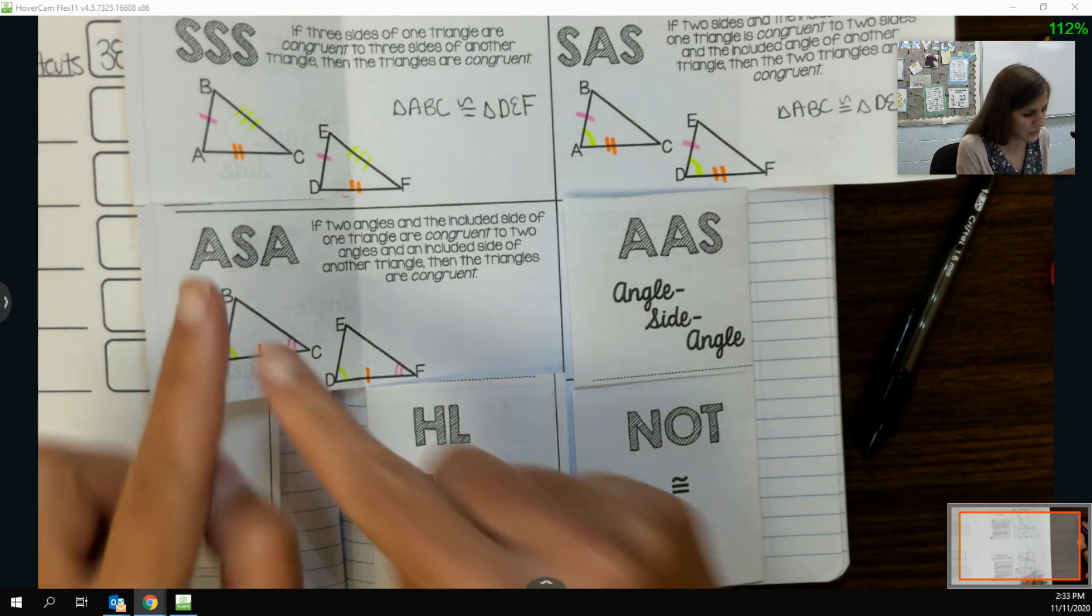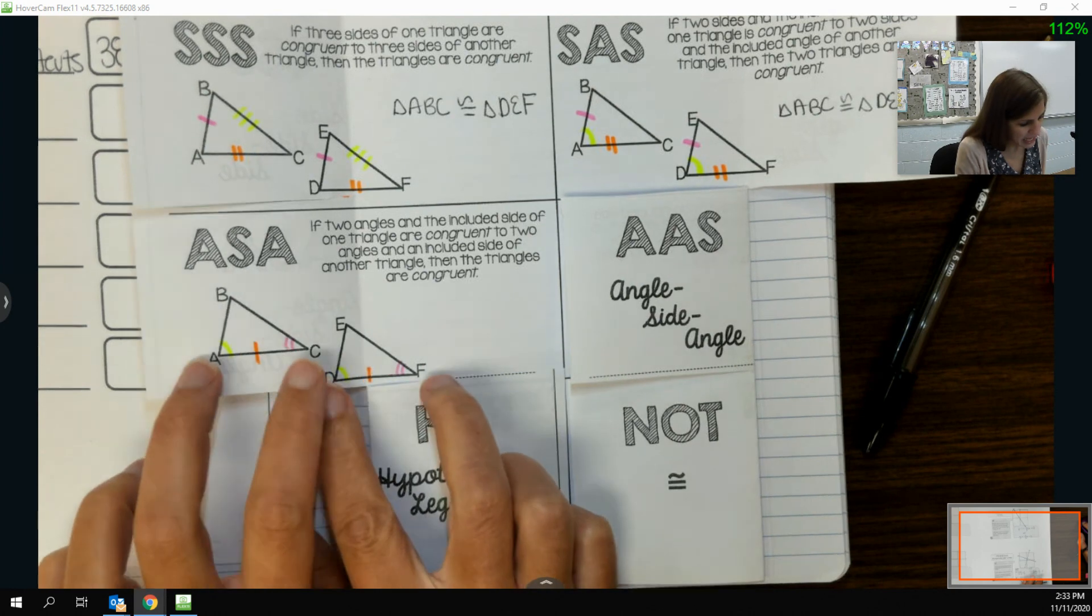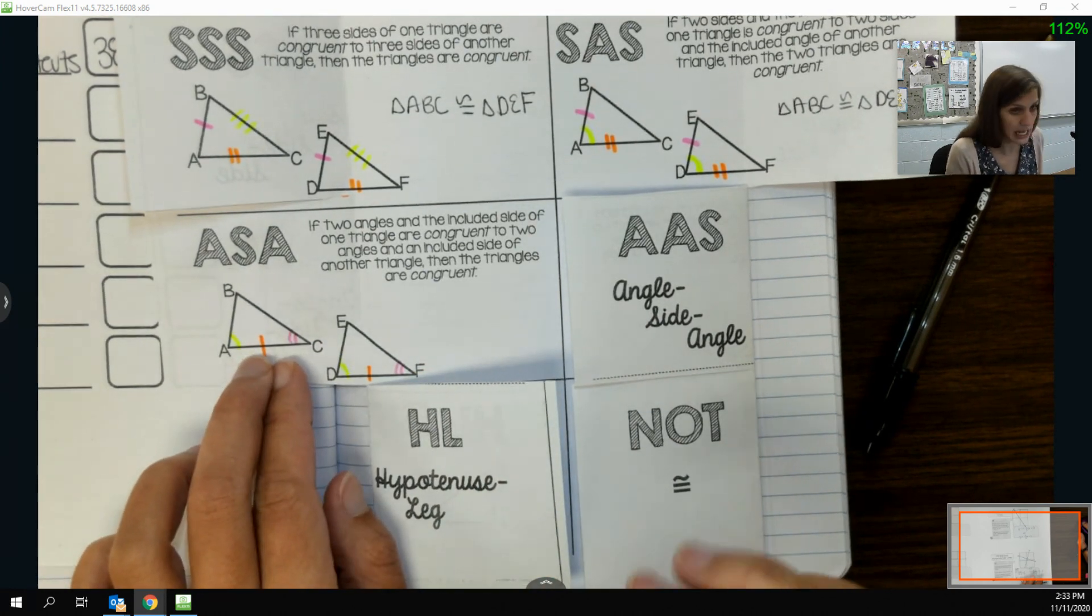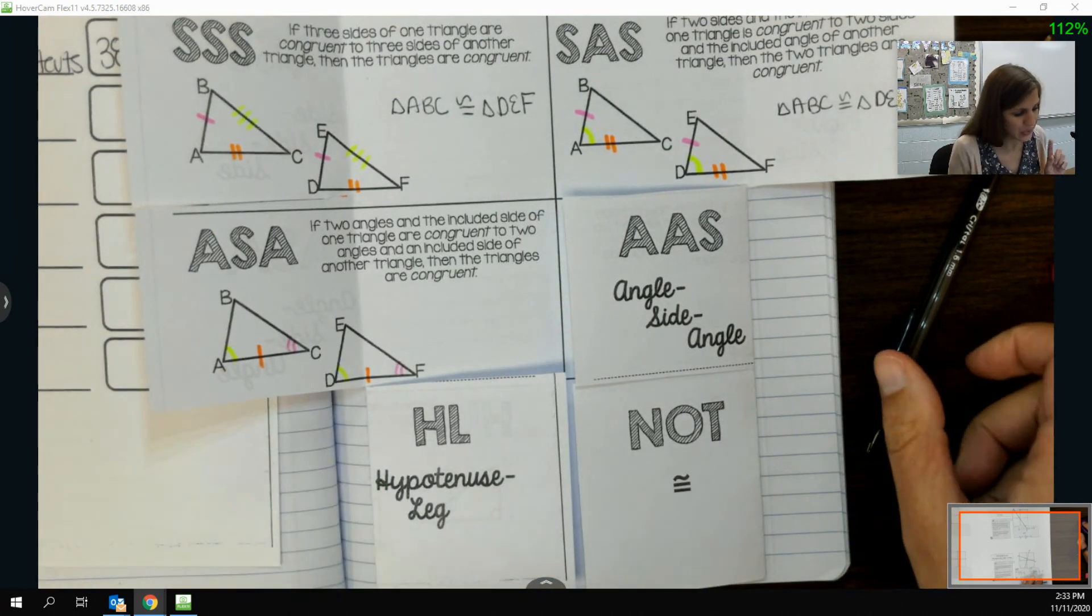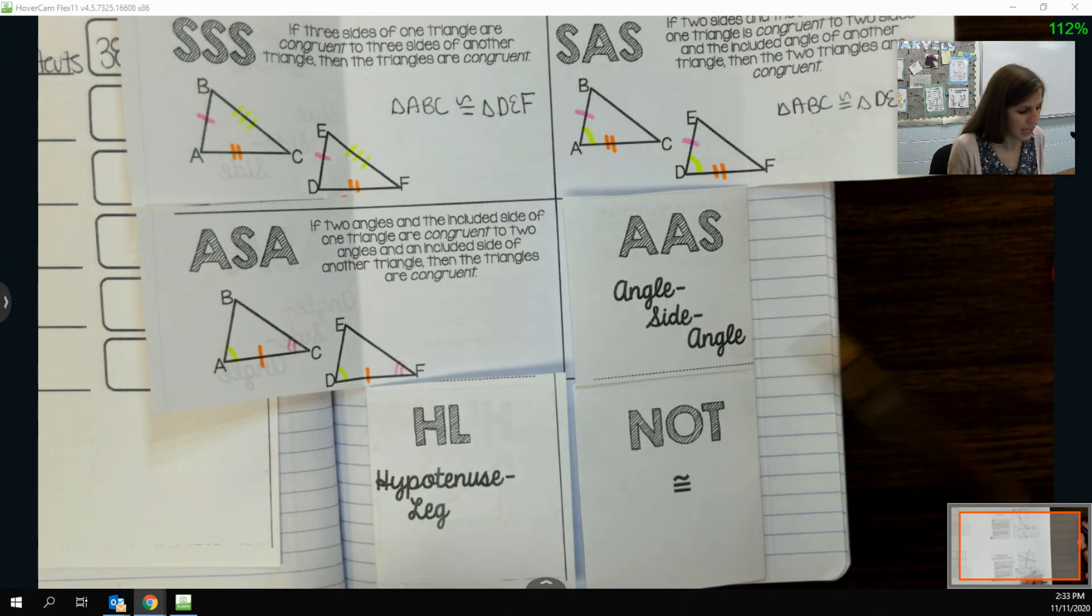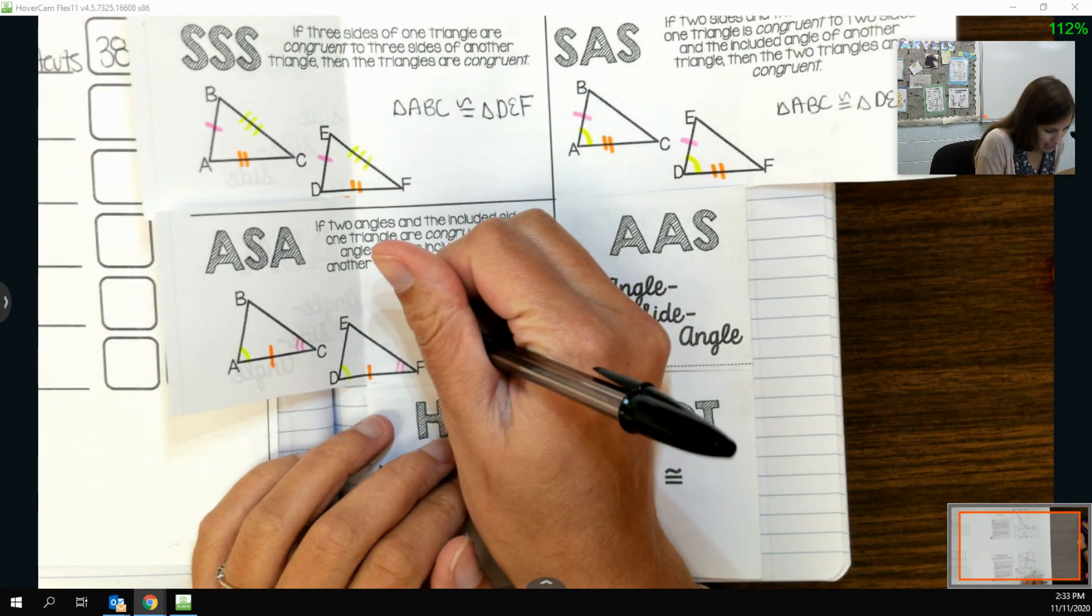To use angle side angle, I have to have the two angles surrounding that side to call it the angle side angle theorem.